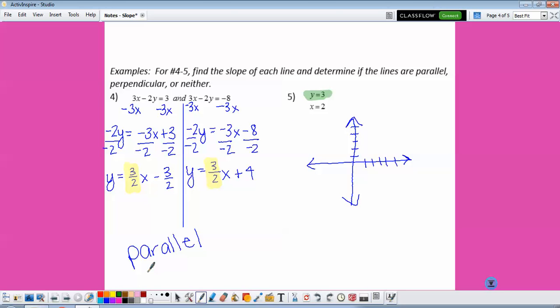X equals 2 is a vertical line that crosses the X axis at 2. And we can see that those are going complete opposite directions, so therefore these are perpendicular.